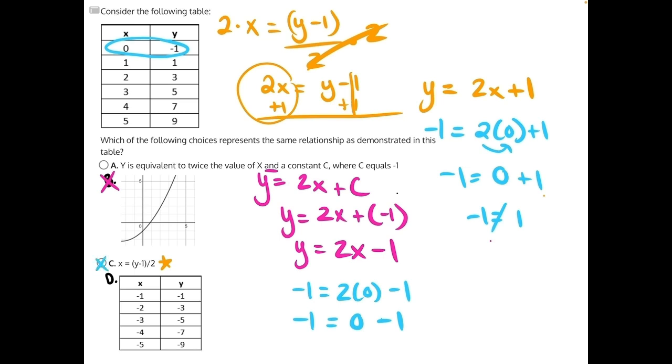For answer choice A, we will have 0 minus 1, which is negative 1, and that does match. So answer choice A could be potentially the correct answer. And we will test the rest of the values in the table with answer choice A.